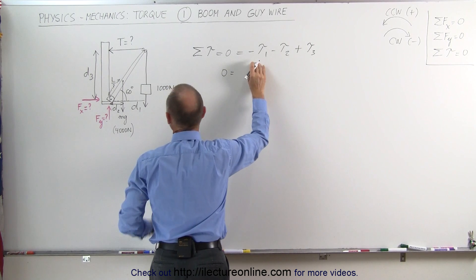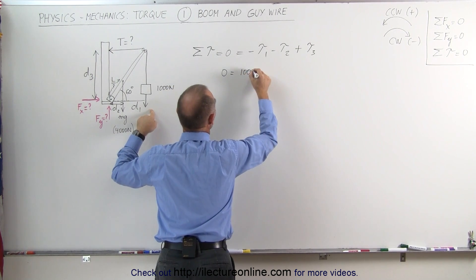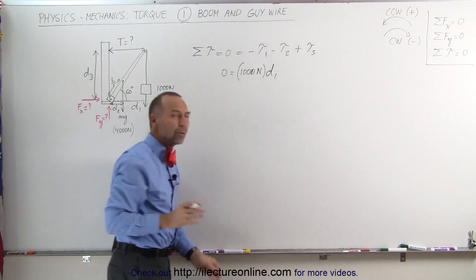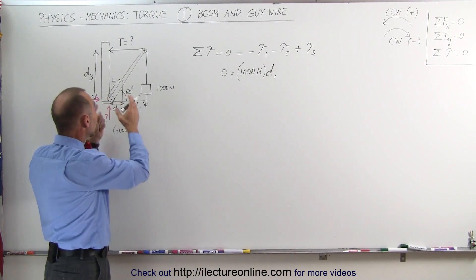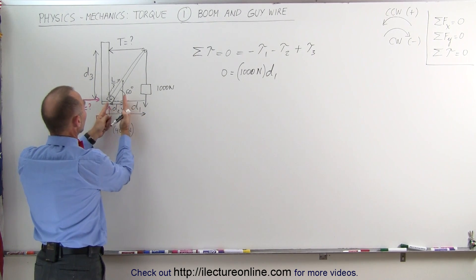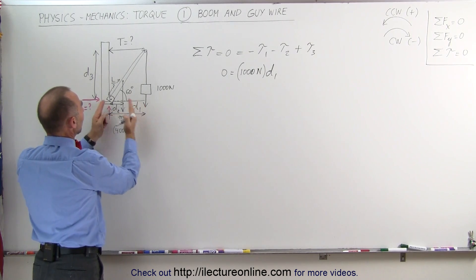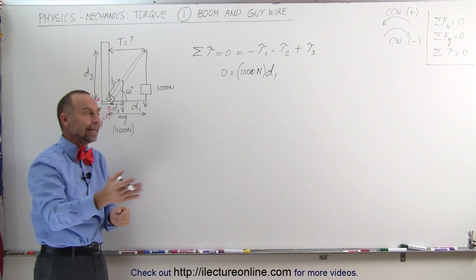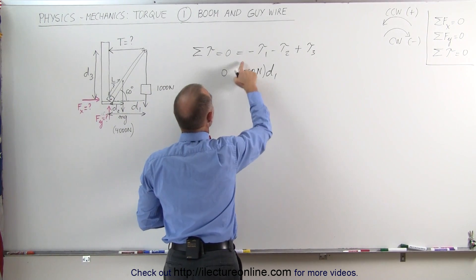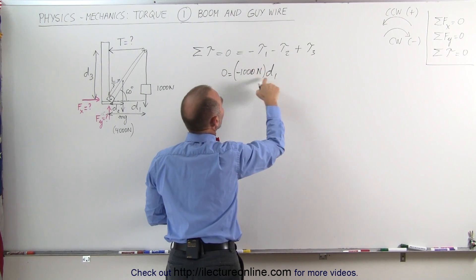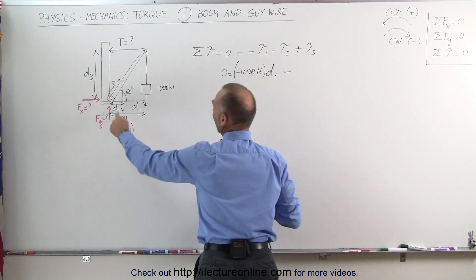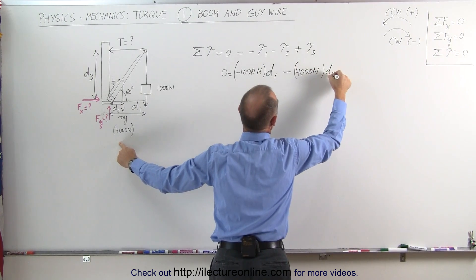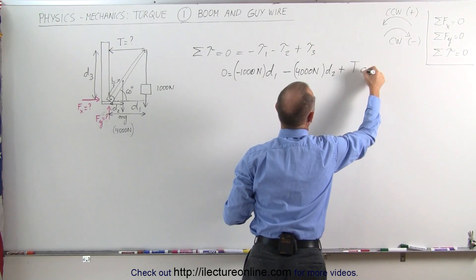Setting up the equation: 0 = −1,000 newtons × D1 − 4,000 newtons × D2 + T × D3. I recommend labeling the distances D1, D2, and D3 first, then figuring out what they are afterwards — that way you're less likely to make mistakes. D1 is the full length of the beam projected to the pivot, D2 is one-third of that, and D3 is the perpendicular distance from the tension's line of action to the pivot.